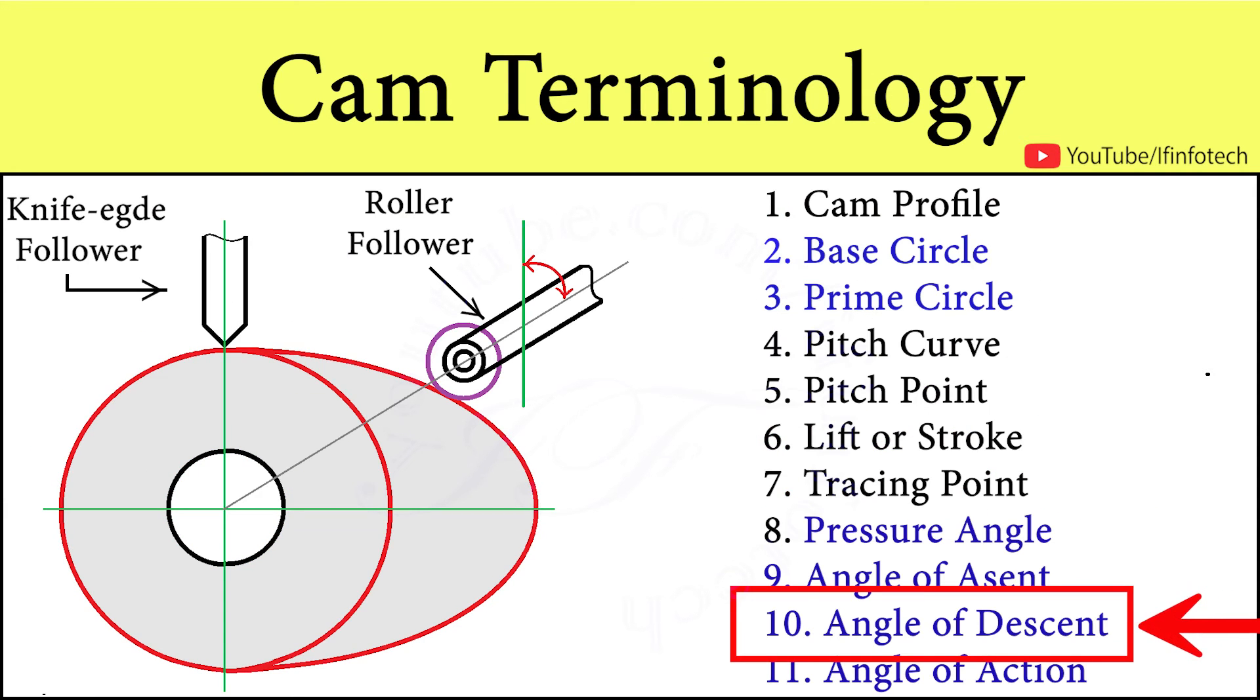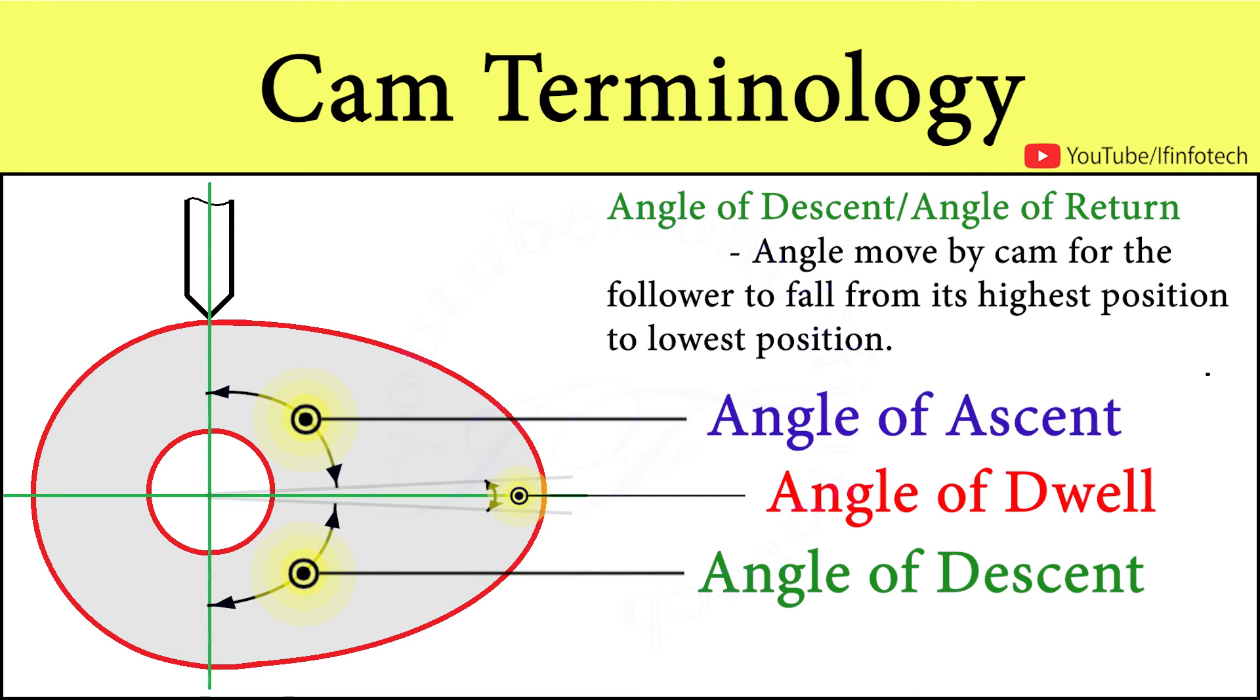Next is angle of descent. Angle of descent is the angle moved by cam for follower to fall from its highest position to its lowest position.